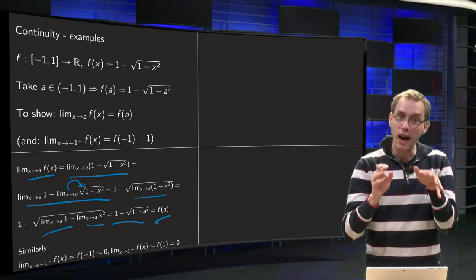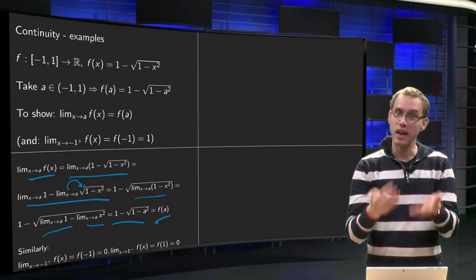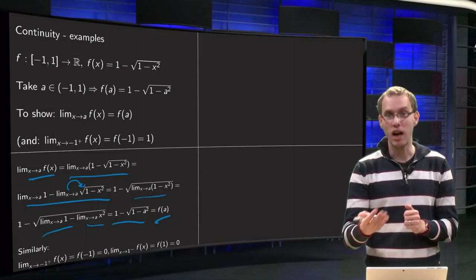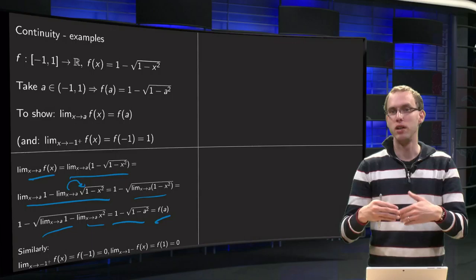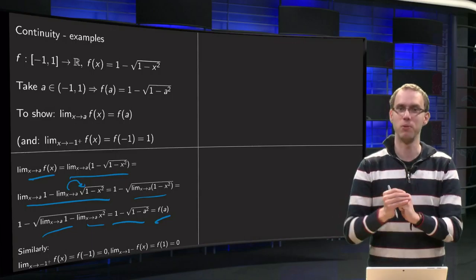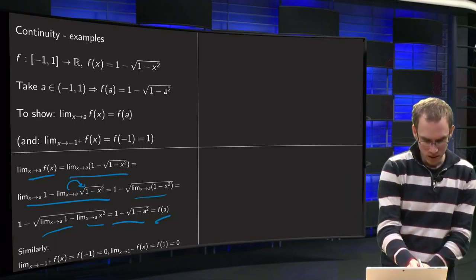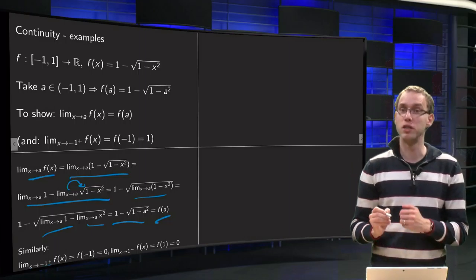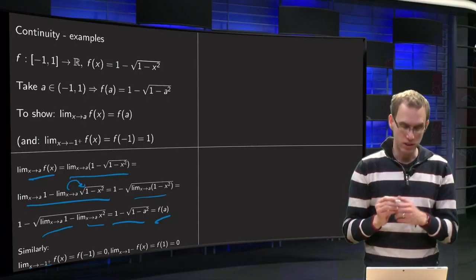You know that you can plug in the a, so that you use the 1 minus square root of 1 minus a squared equals f of a. So we know that f of x is continuous for any a in the interior minus 1, because limit x to a of f of x equals f of a. So once you know all your limit rules, the proof is really straightforward, just application of limit rule after limit rule.